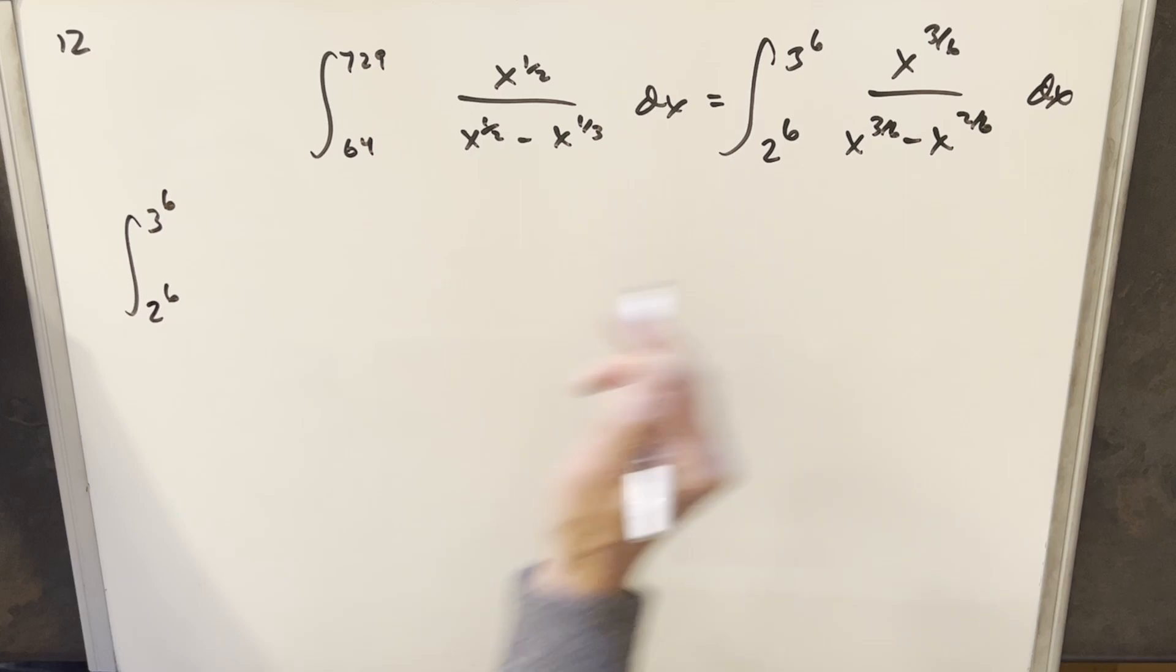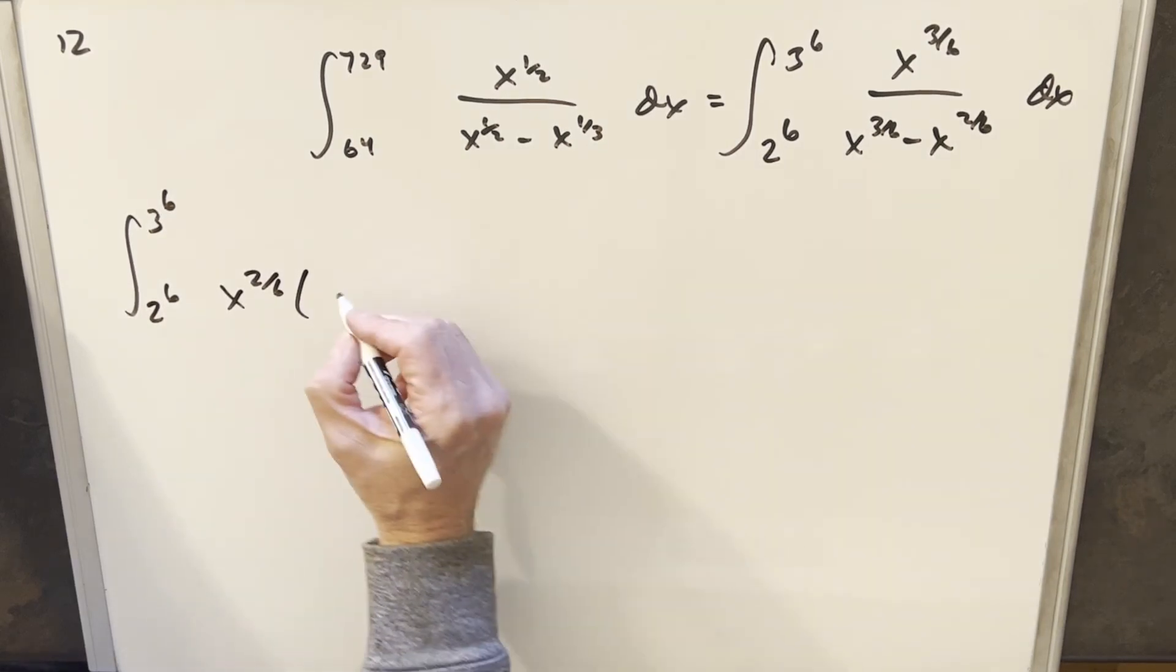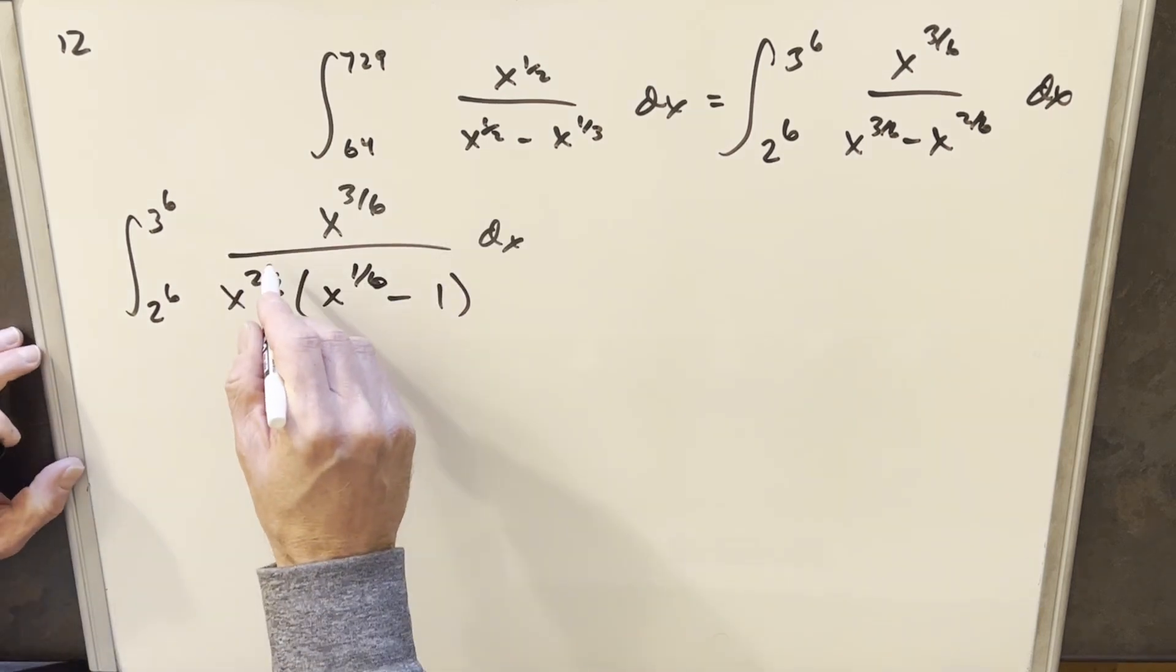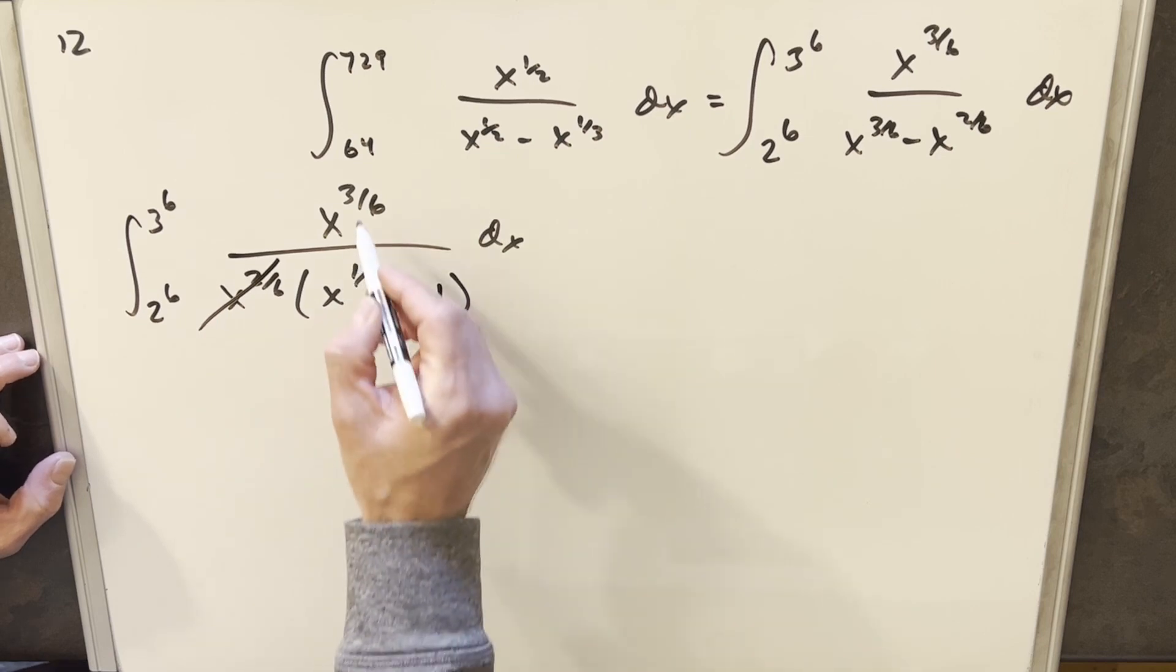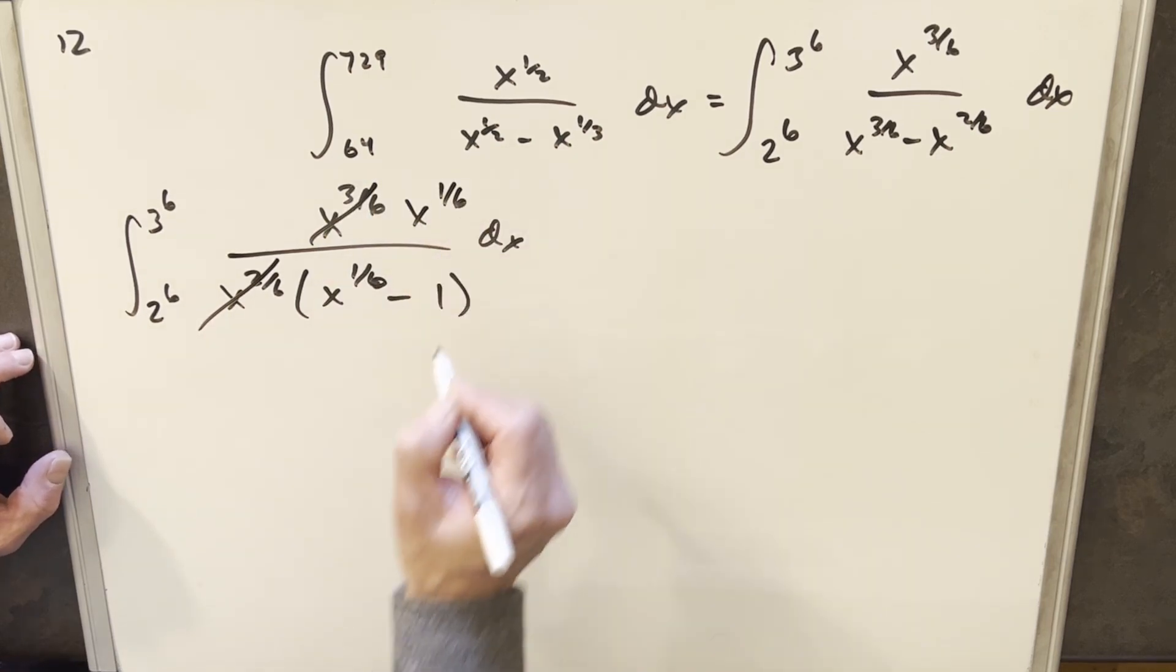But then what I can do is factor an x to the 2/6 out in the denominator. This is going to be x to the 1/6 and this is just going to be 1. I'll factor 2/6 here with 2/6 here and then this is going to be x to the 1/6.